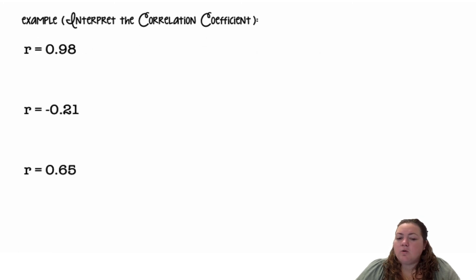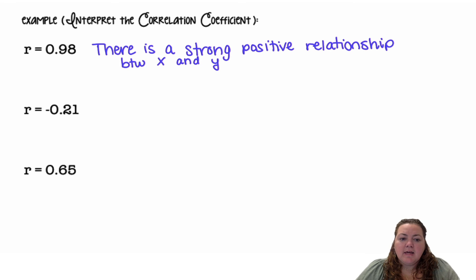And interpreting the correlation coefficient. So if they give you the correlation coefficient, what does that tell you? So if R equals 0.98, this tells me that there is a strong positive relationship between X and Y. Remember, R, the correlation coefficient, tells you the strength and the direction. So it's strong because it's really close to 1, and it's a positive value, so it's a positive relationship.